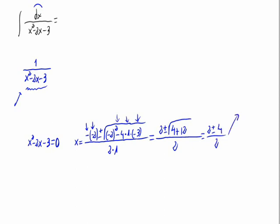So the solutions are (2 plus 4) divided by 2 and (2 minus 4) divided by 2, which gives us 3 and minus 1. If what we had inside the square root were negative, we would have had complex roots, and complex roots would mean the integral would be of a different type.